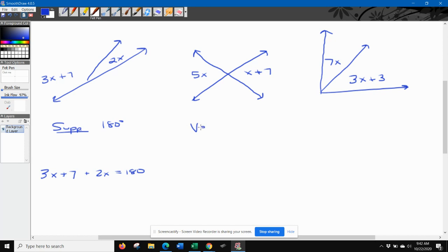On the next one, we have vertical angles. Those are angles that are right across from each other, and they are congruent. So the equation we can write is 5x is equal to x plus 7.